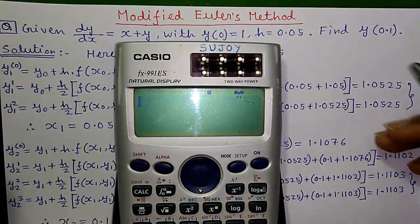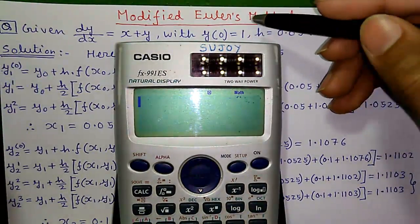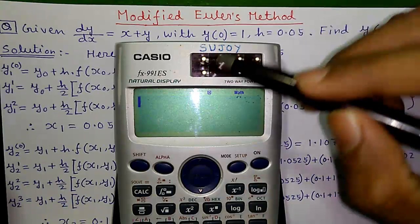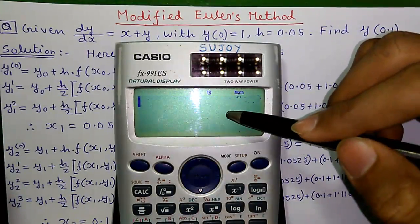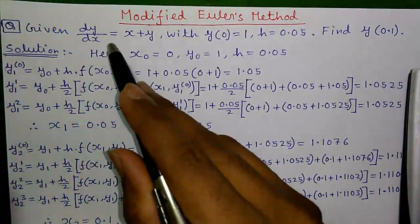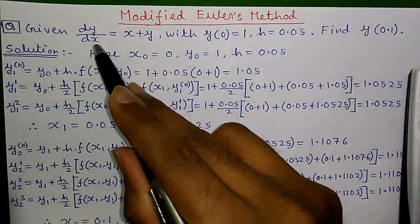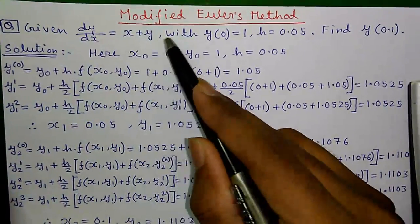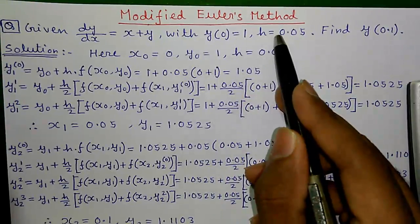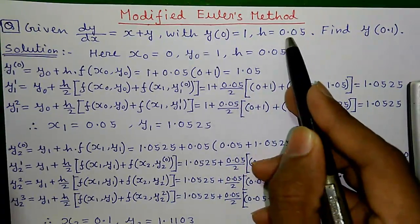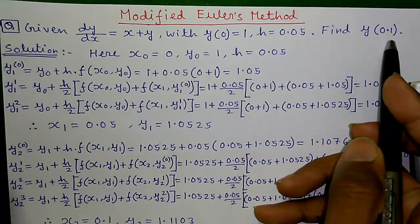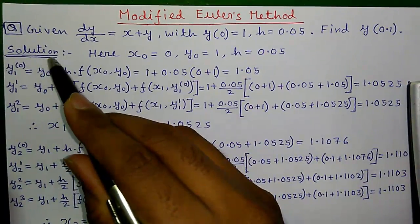Hello friends, I am Sujoy and today I will tell you how to do Modified Euler's method very easily with the help of this Casio scientific calculator. So let's start. Our question is: given dy/dx equals x plus y, with y(0) equals 1 and h equals 0.05. Find y(0.1).